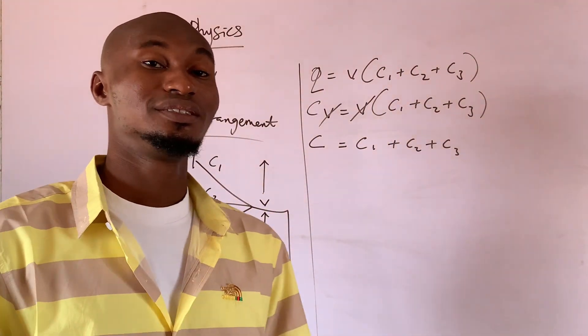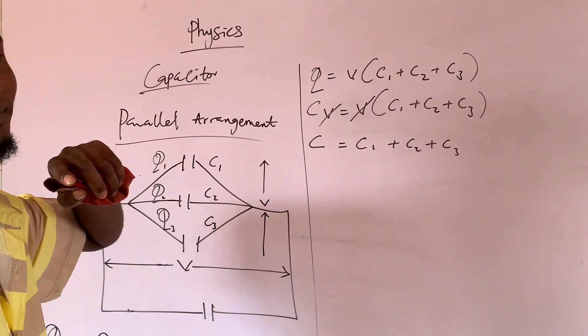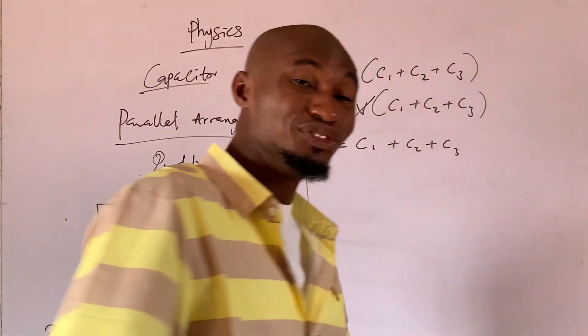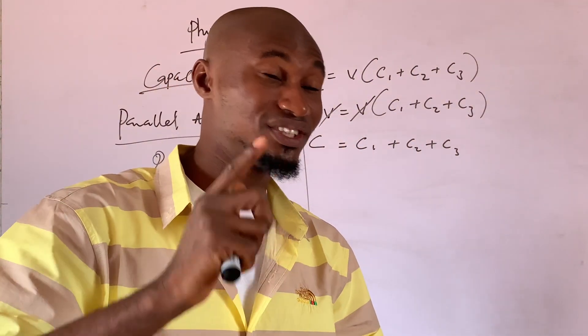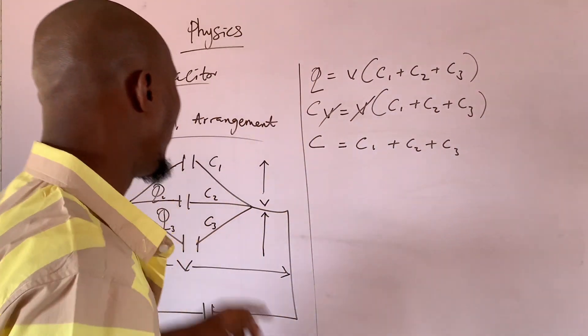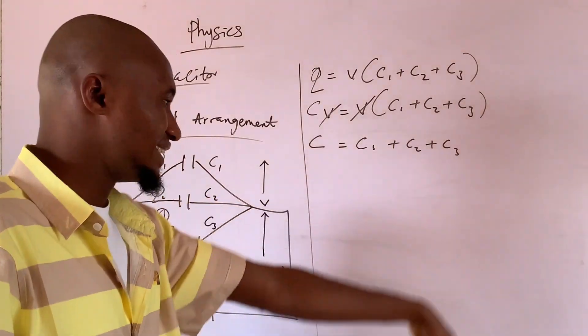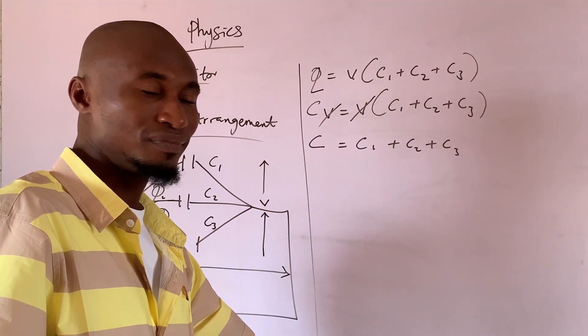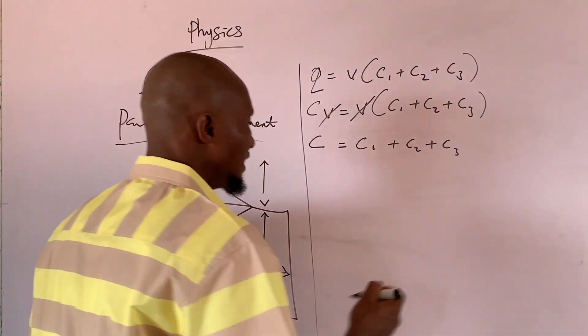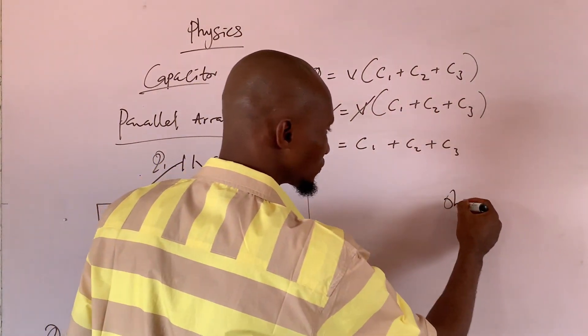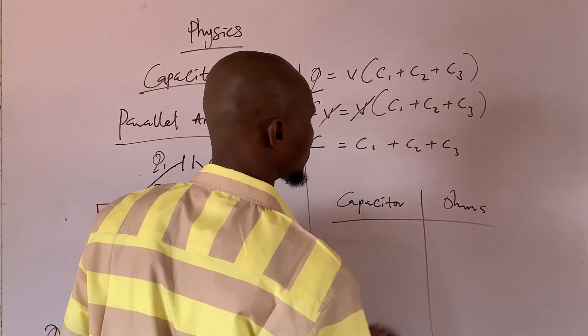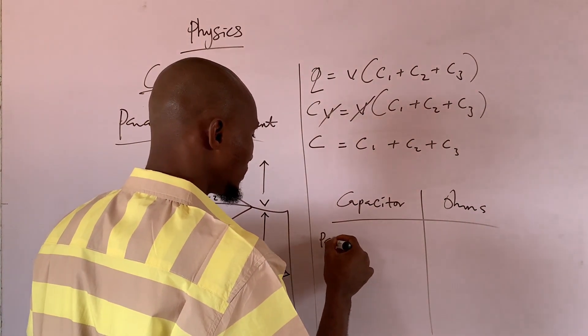So, for parallel arrangement, the capacitance of the capacitor is C1 plus C2. Now, don't get it twisted. In normal electricity, that is when it has to do with Ohm's law, parallel arrangement looks like the series in capacitance. Why the series in capacitance? I don't want to confuse you. Now, look up. In electricity that has to do with Ohm's, this is capacitor.